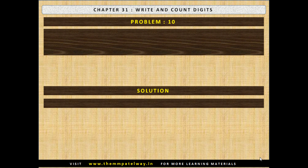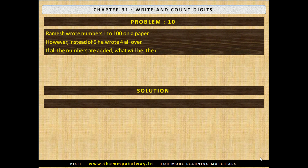Problem No. 10: Ramesh wrote numbers 1 to 100 on a paper. However, instead of 5, he wrote 4 all over. If all the numbers are added, what will be the variation in the total of all the numbers? Now stop the video and find the solution. The solution follows: the variation will be 110 — 10 in the unit column and 100 in the tens column.